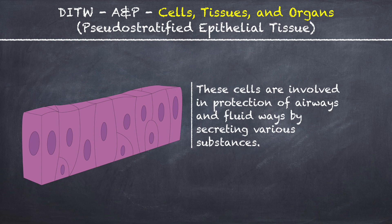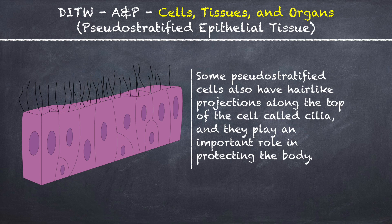These cells are involved in protection of airways and fluid ways by secreting various substances. Some pseudostratified cells also have hair-like projections along the top of the cell called cilia, and they play an important role in protecting the body.